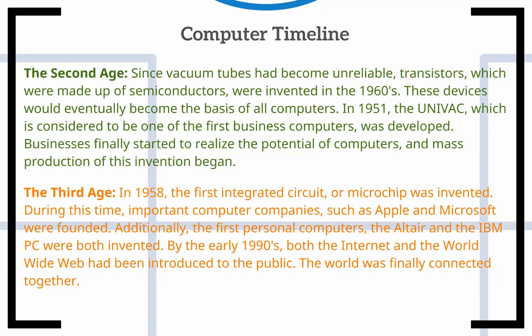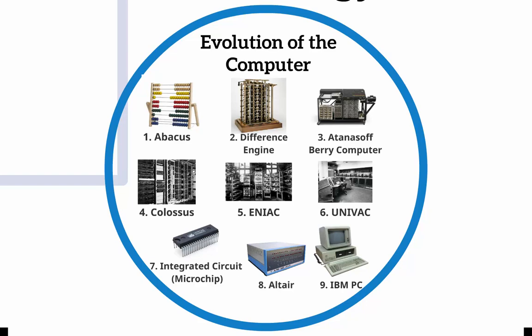The third age — the age of the integrated circuit, the one that we are in today — was a tremendous transition. It allowed a single circuit to incorporate hundreds, thousands, and eventually billions of transistors onto a single chip. These were some of the things that pioneered the Internet and the World Wide Web. Here's a little graphic showing the evolution of the computer, starting off with an abacus, moving up into Babbage's difference machine, the Berry computer, the Colossus, the ENIAC, all the way down to the IBM PC.